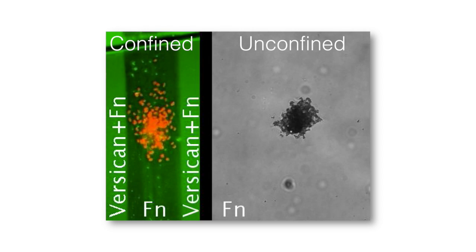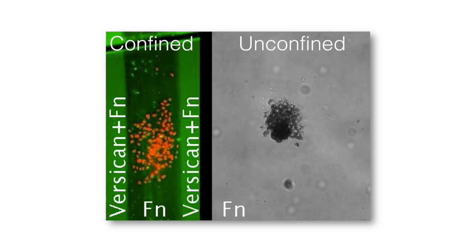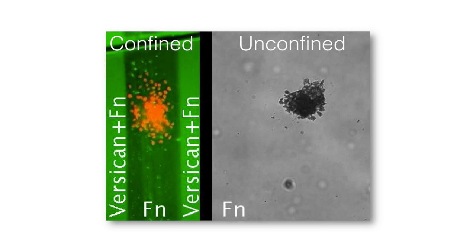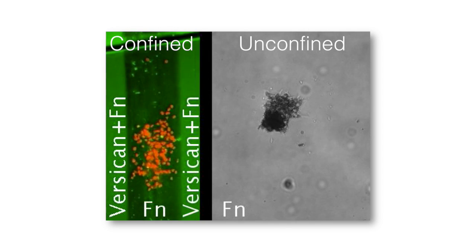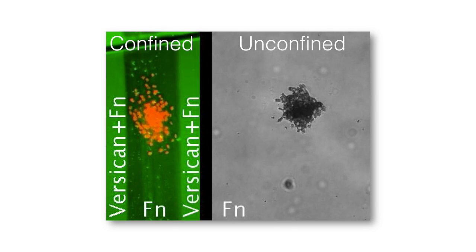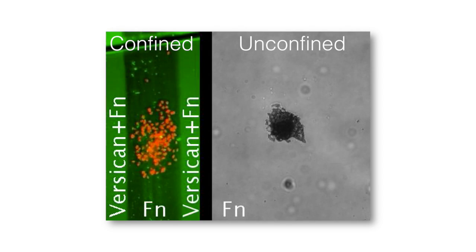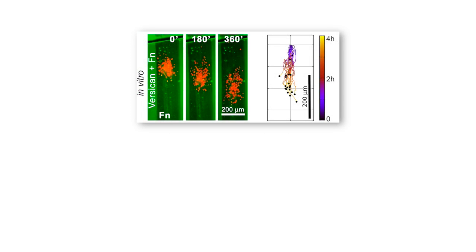So in order to test for sufficiency, we cultured the neural crest in vitro and we generated confinement of these cells by capturing the cells in a lane that was surrounded by Versican. And what happened was the cells that without confinement just migrate randomly, they start to migrate as a cluster, as a collective, in a directional manner, just controlled by the presence of Versican at the border.